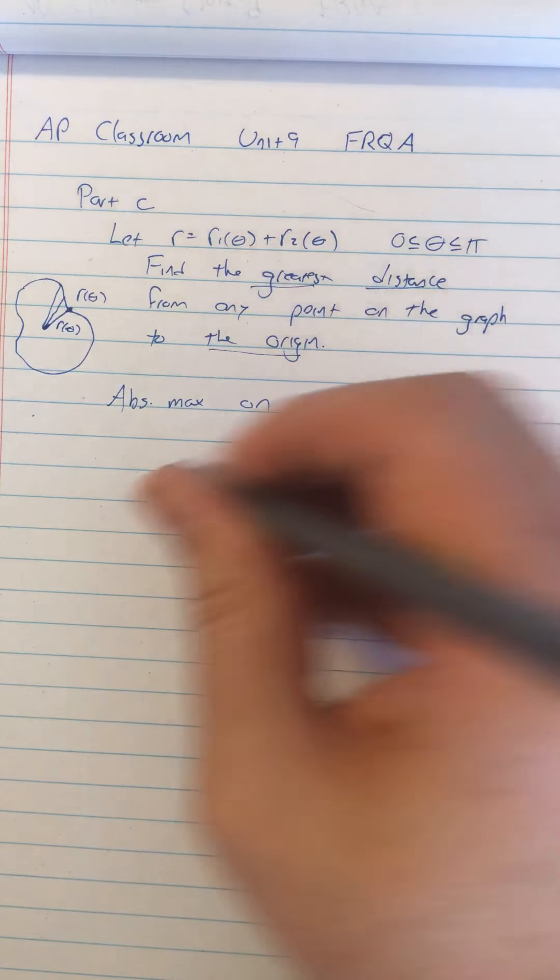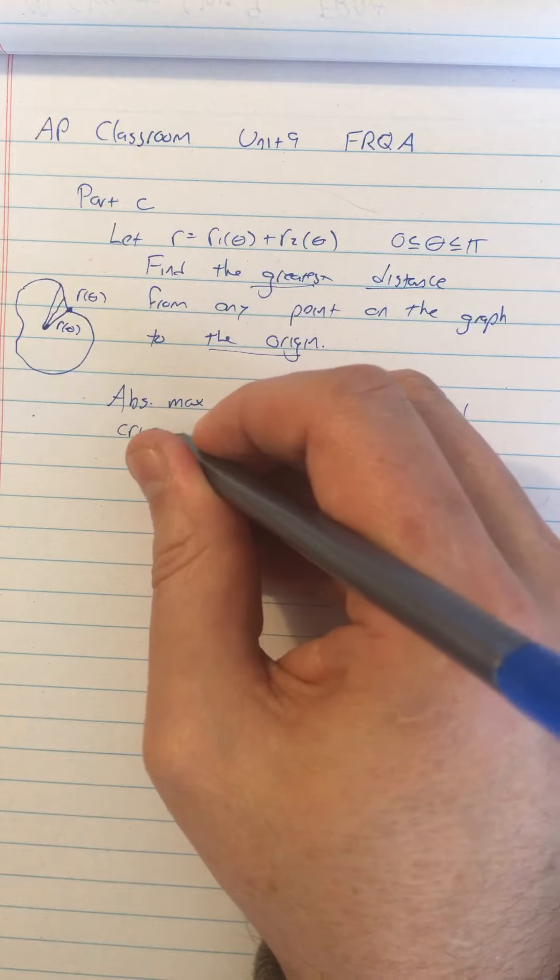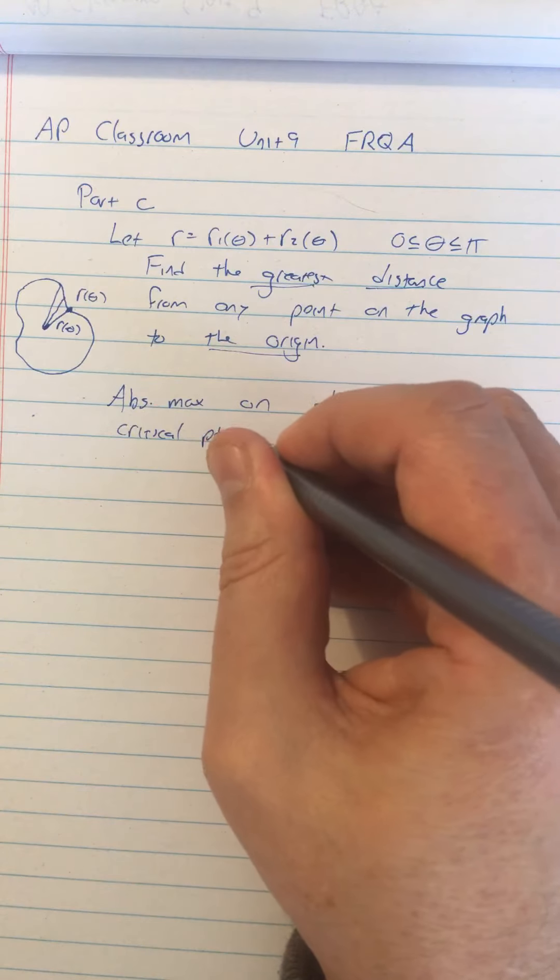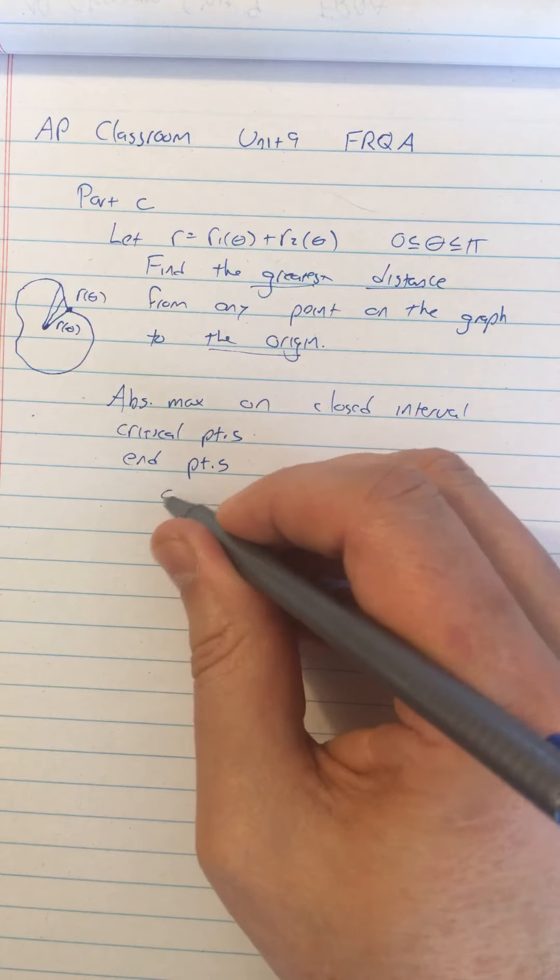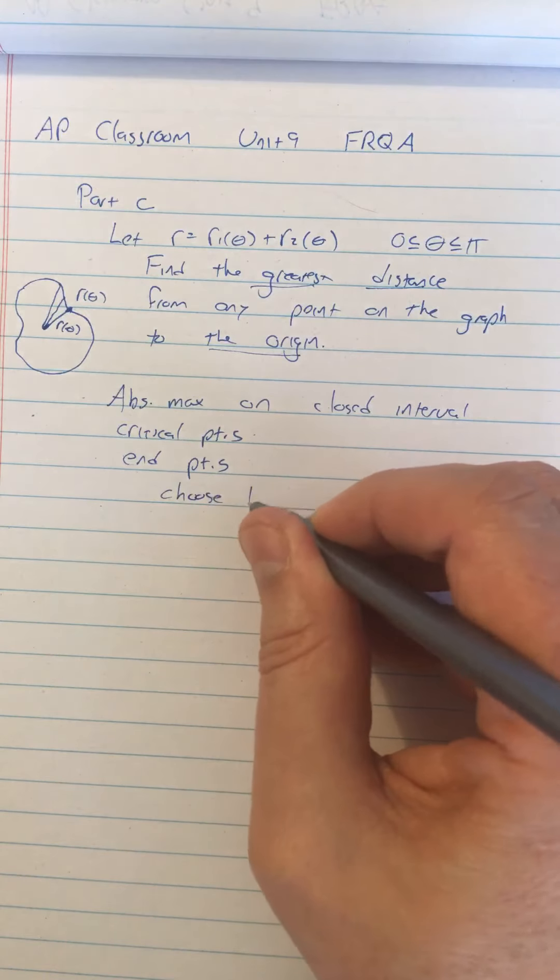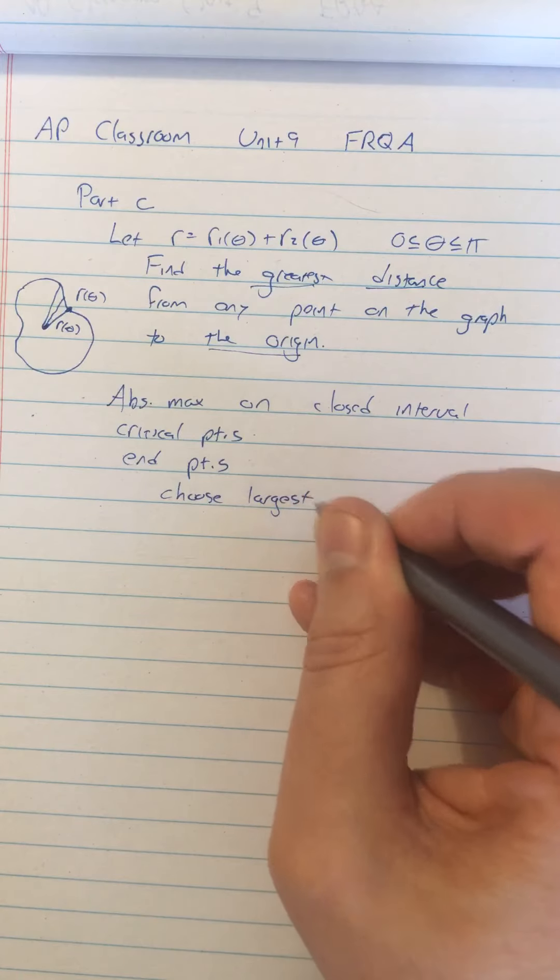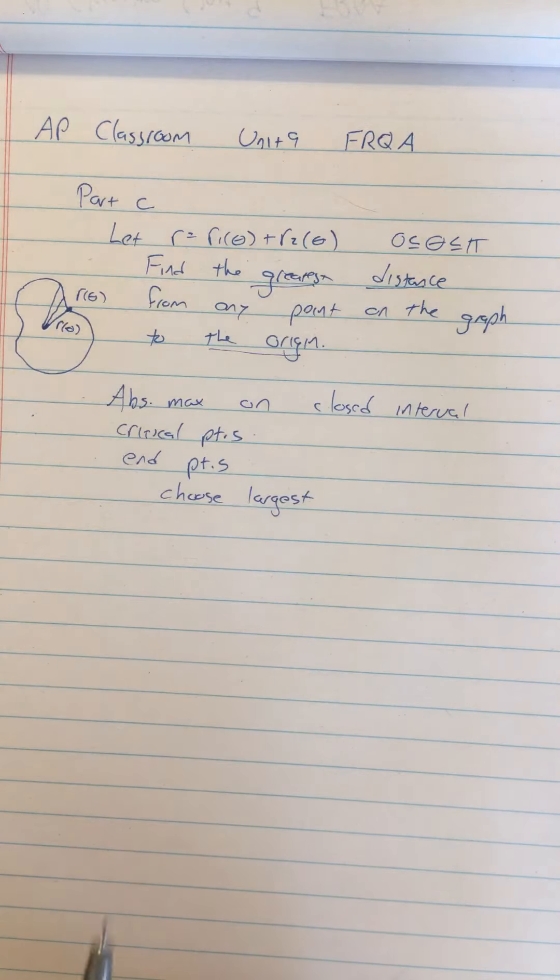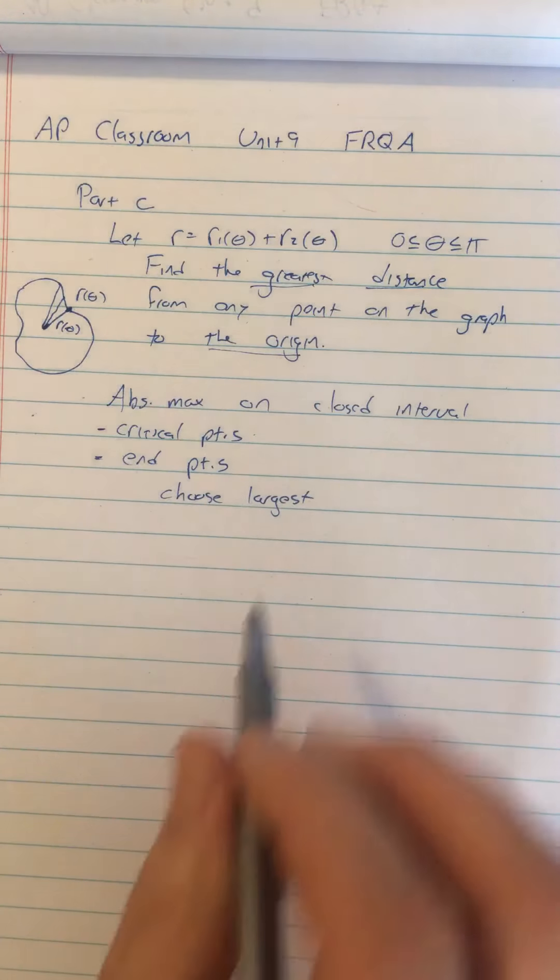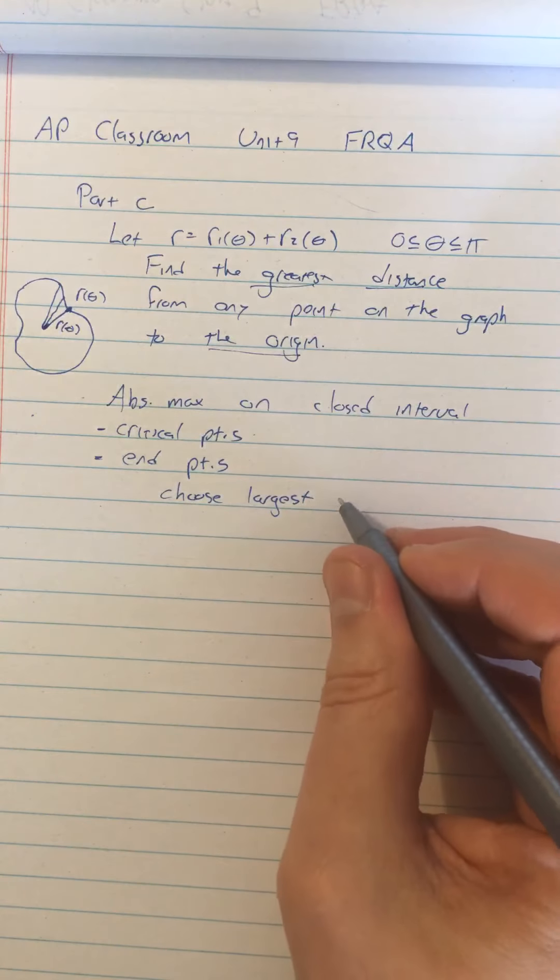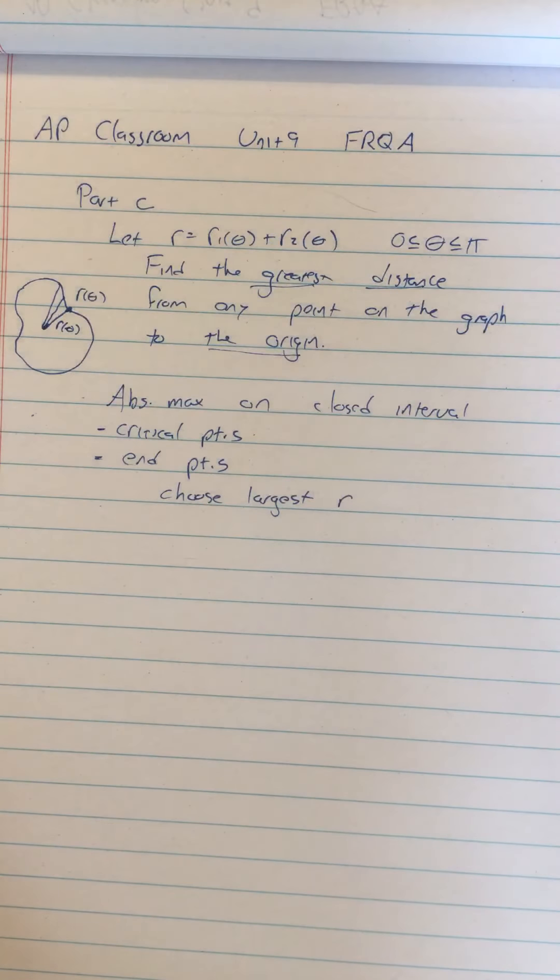In that case, what we want to do is find all the critical points and the endpoints. And we just want to choose the largest value. That's how you find absolute max on a closed interval. And that comes up in free response question B, number two as well. So we need to find the critical points, we need to find the endpoints, and then just choose the largest R value in this case.